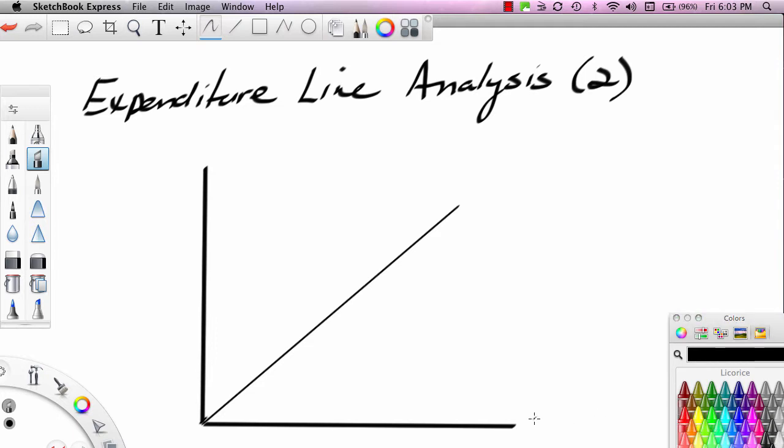In our first segment, we took a look at how expenditure line data can be used to calculate both the slope of the expenditure line as well as the autonomous expenditures, or the y-intercept of the expenditure line. In this particular segment, we want to talk about equilibrium GDP and equilibrium TPE as applied to expenditure line analysis.